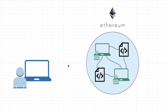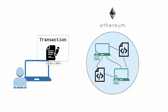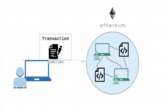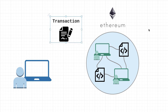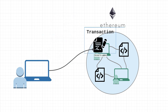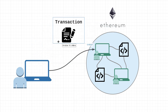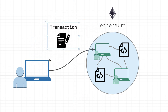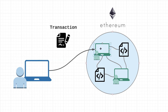Welcome back. In this video we are going to take a deeper dive into transactions. To recap, a transaction is basically an instruction from an account requesting some kind of update to the state of the Ethereum network. The most simple example would be a transaction requesting a transfer of ether from one account to another, updating the account balance of both parties.